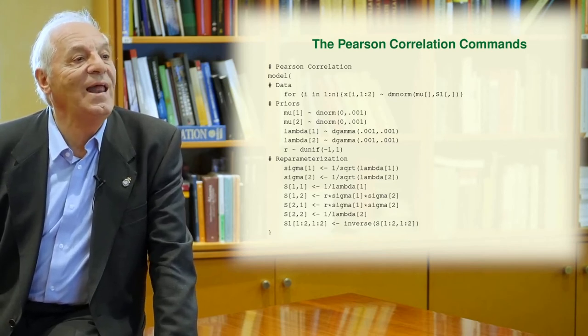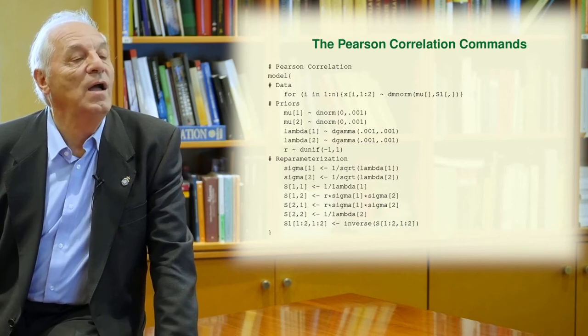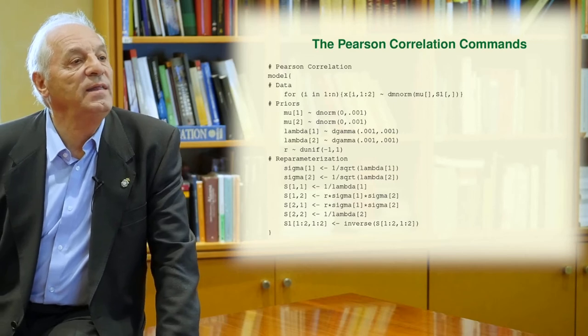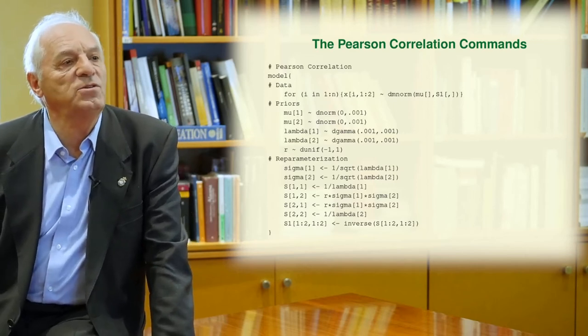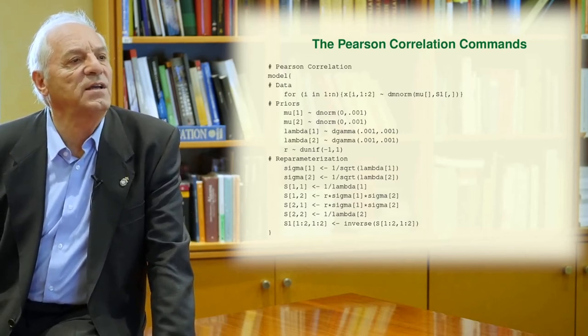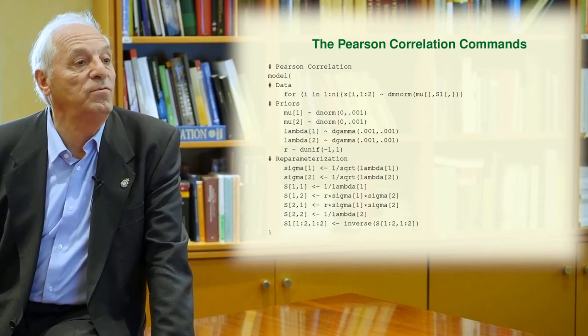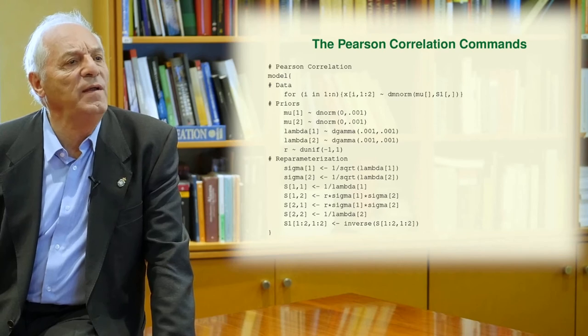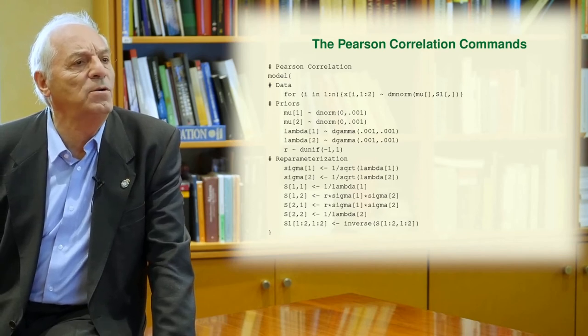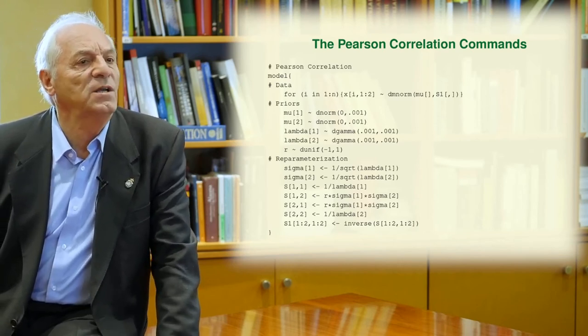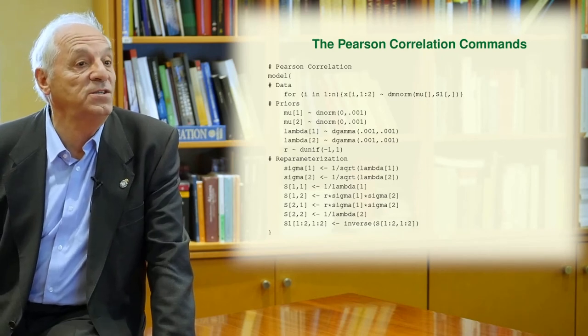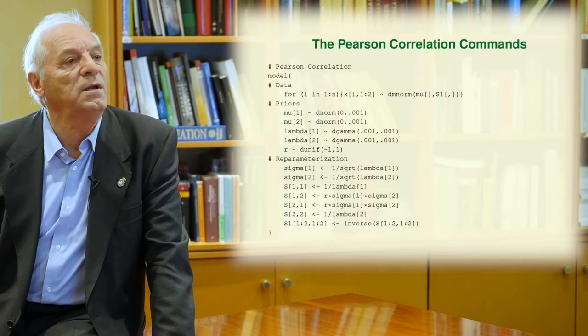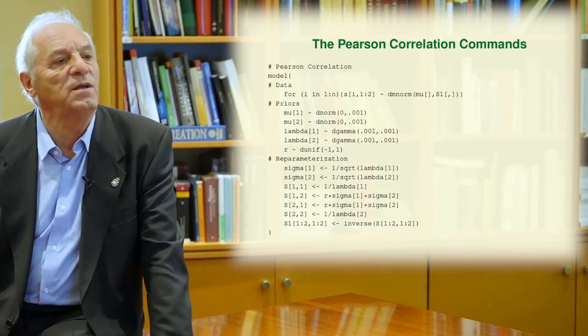The lambda 1 and lambda 2 are assumed with gamma non-informative priors. And then the Pearson coefficient is defined as a non-informative prior, which is uniform between minus one and one. And then we define the reparametrization of our problem because OpenBUGS works with precisions and not with variances, and then we need to define sigma, the standard deviation, in terms of the precisions.